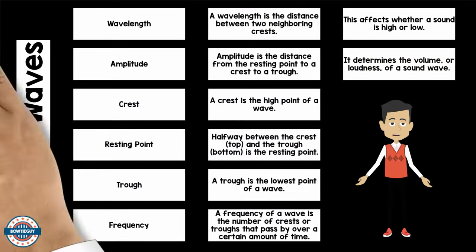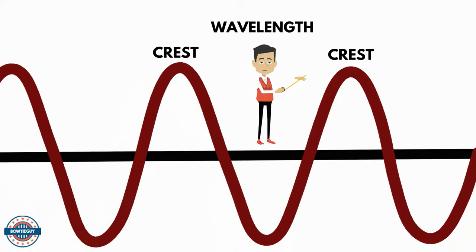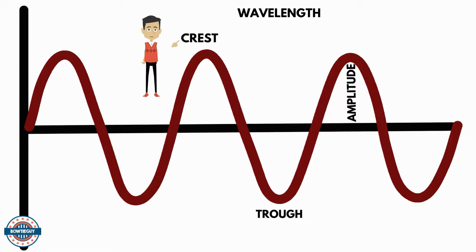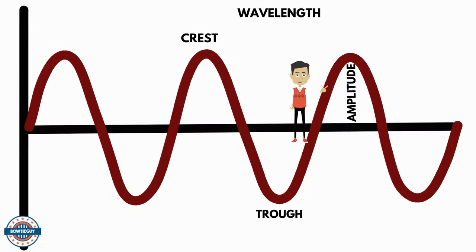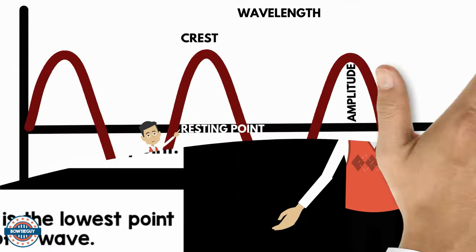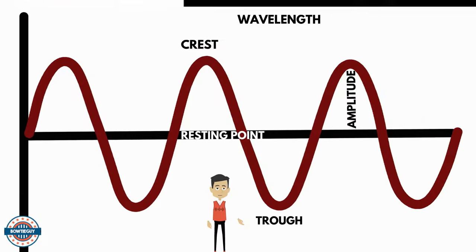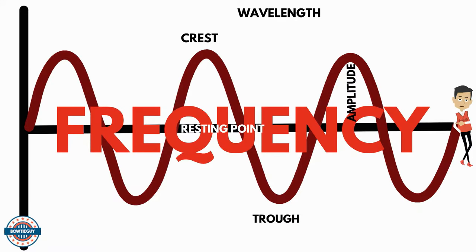A wavelength is the distance between two neighboring crests, and it affects whether a sound is high or low. A crest is the high point of a wave. Amplitude is the distance from the resting point to a crest or a trough, and it determines the volume or loudness of a sound wave. Halfway between the crest, the top, and the trough, the bottom, is the resting point. A trough is the lowest point of a wave. The frequency of a wave is the number of crests or troughs that pass by over a certain amount of time.